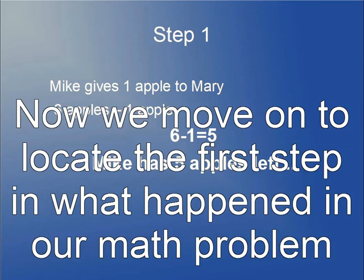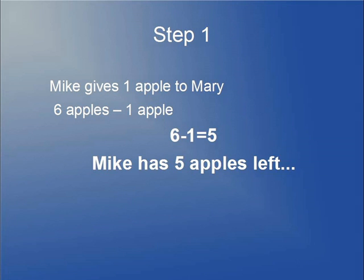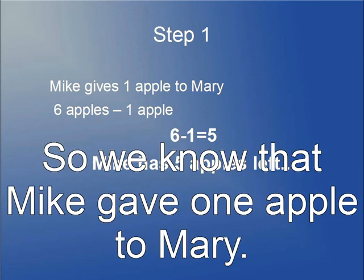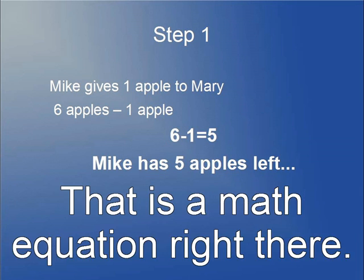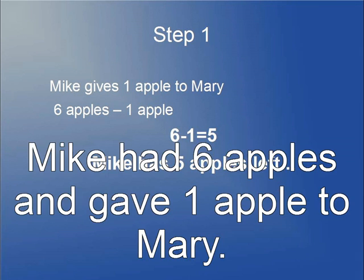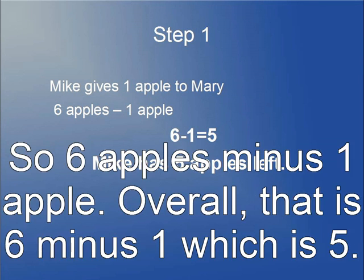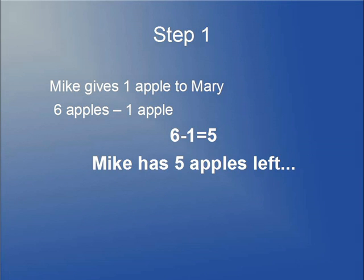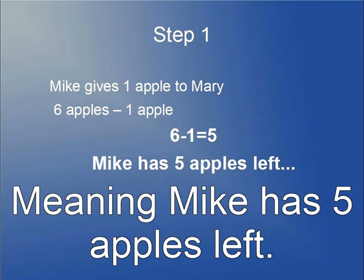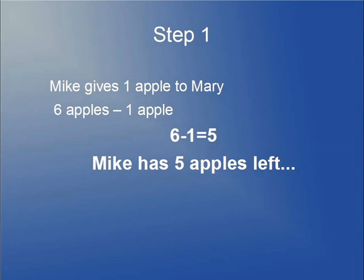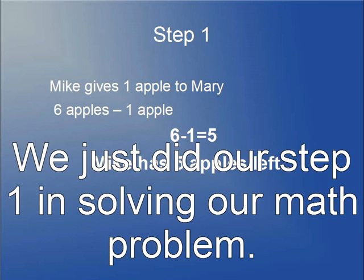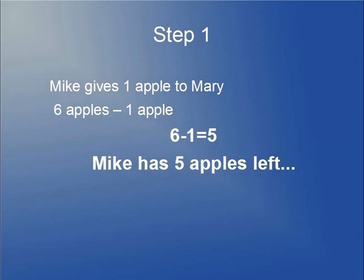Now we move on to locate the first step in what happened in our math problem. We note that Mike gave one apple to Mary — that's a math equation right there. Mike had six apples and gave one apple to Mary, so six minus one equals five, meaning Mike has five apples left. We just completed step one in solving our math problem.